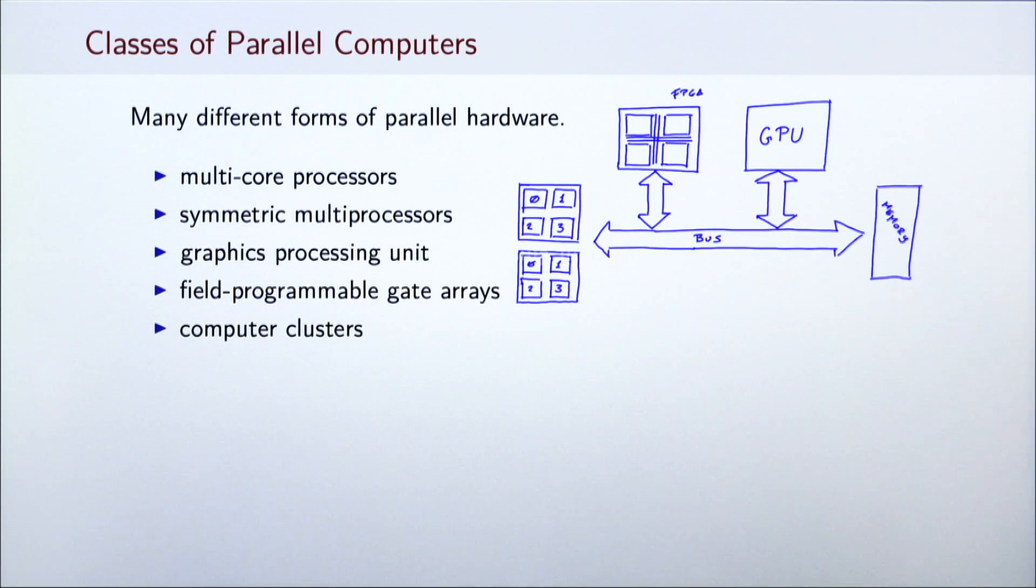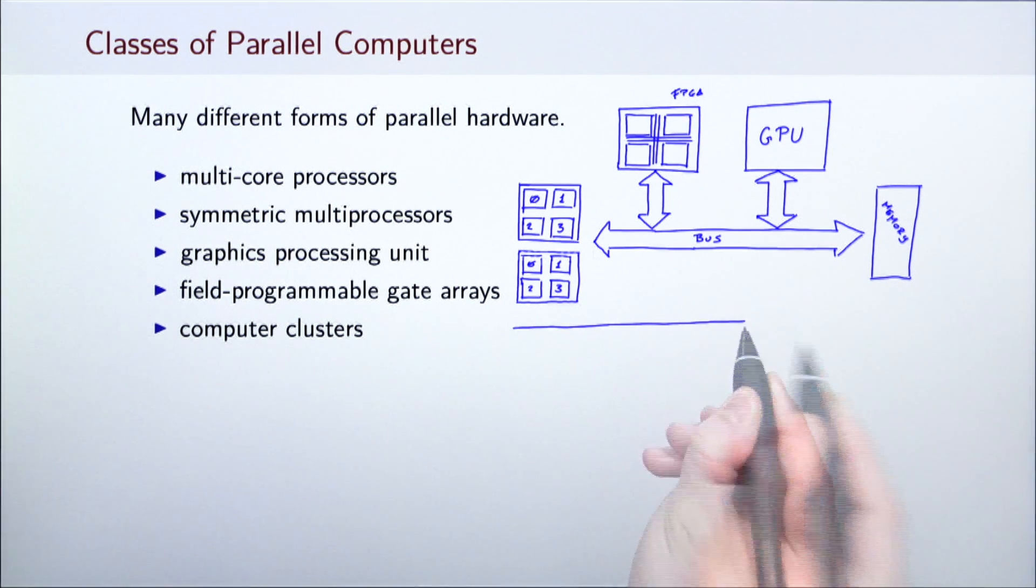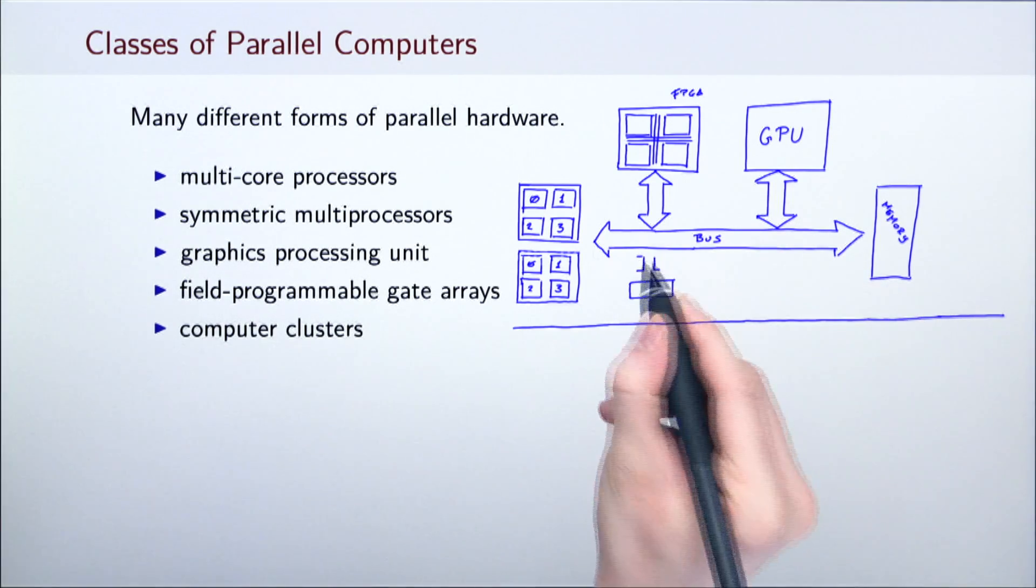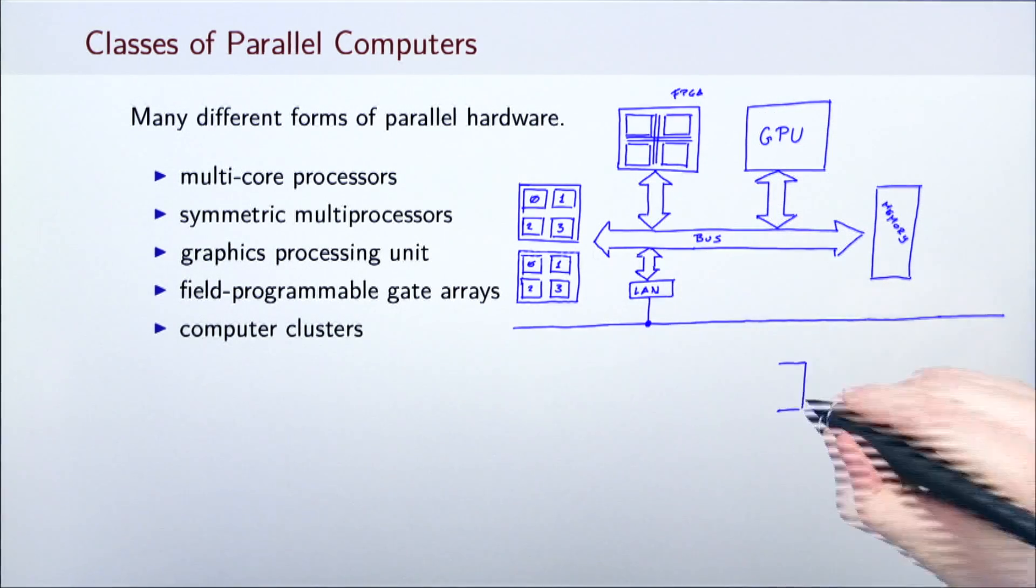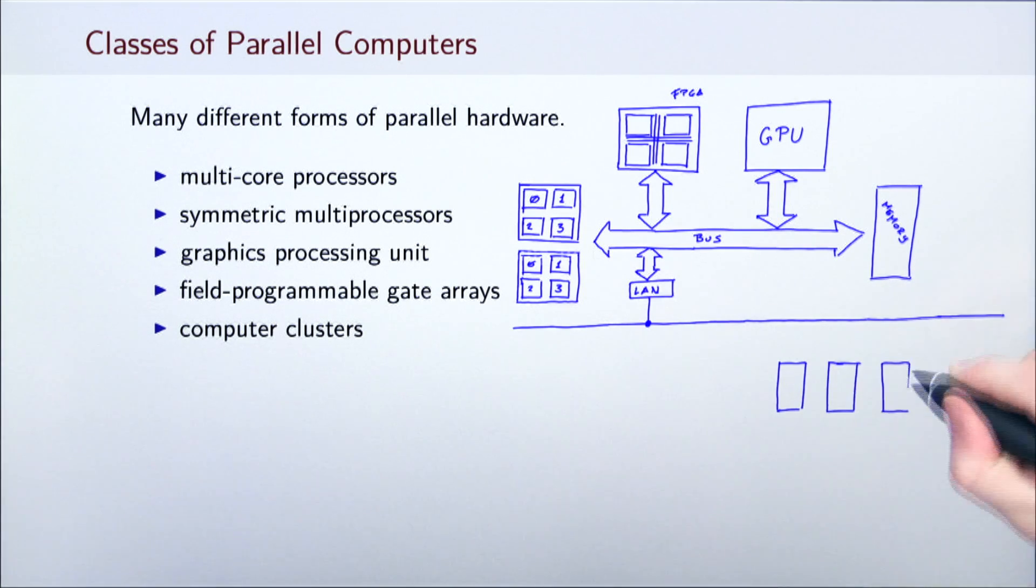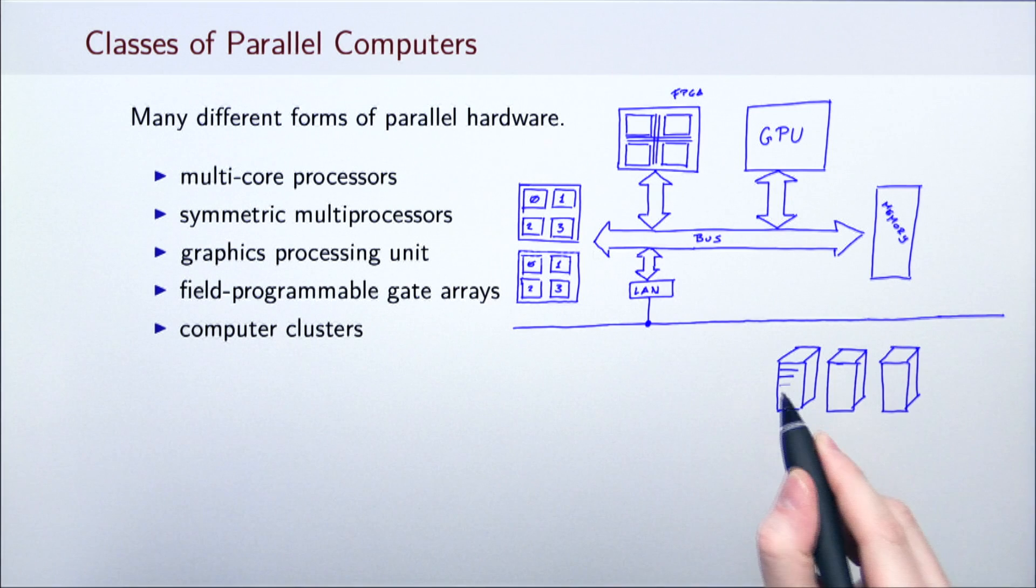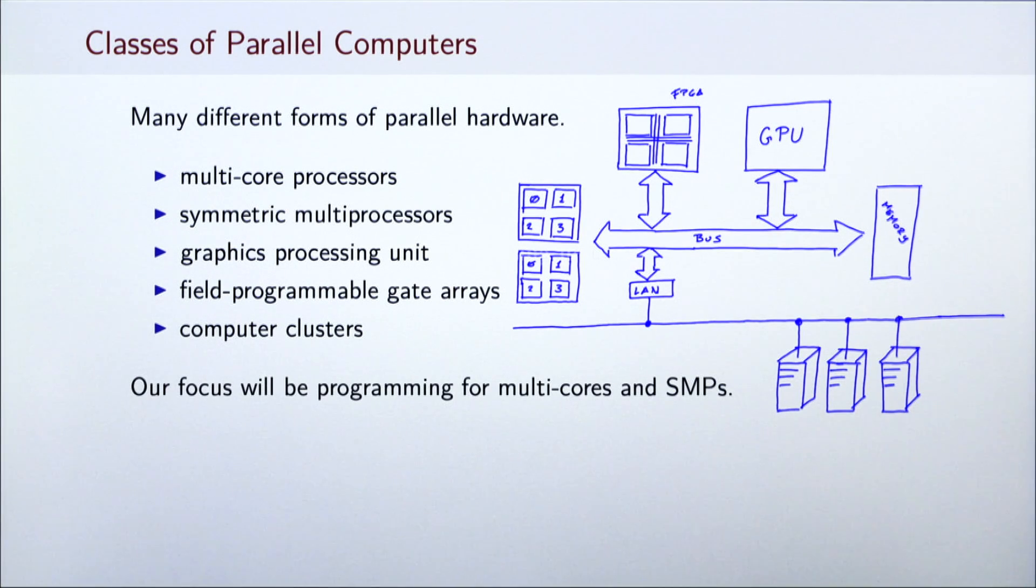Final class of parallel computers that we will mention are computer clusters, groups of computers connected via network that do not have a common shared memory. Sometimes, computers in the cluster also have coprocessors such as GPUs and then we call them heterogeneous clusters. In this course, we focus mainly on multi-core processors and symmetric multiprocessors, which are closely related. All our examples and code will be optimized for multi-cores and SMPs. However, the algorithms that we will learn about generalize and can be implemented on most forms of parallel hardware.